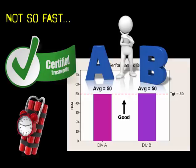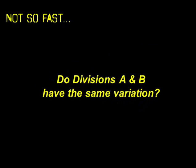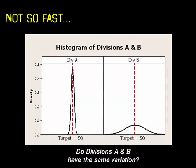And savvy leaders know that averages mask patterns, and they know to ask key questions such as: do these divisions have the same variation? Well, one glance at the graph shows us that no they do not. Division A is what you think of when you hear the word average—most of its output was on target and it varies from target by very little.